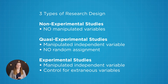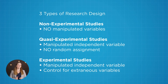Experimental studies have a manipulated independent variable and random assignment, which is a type of control. We're going to go over what manipulation and random assignment are in just a second, but these are really the distinguishing features between these three different types of design, so it's good to have an overview as we start.